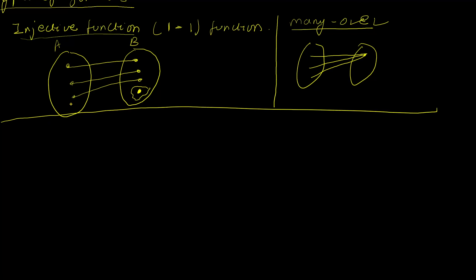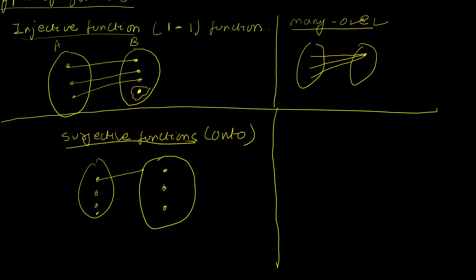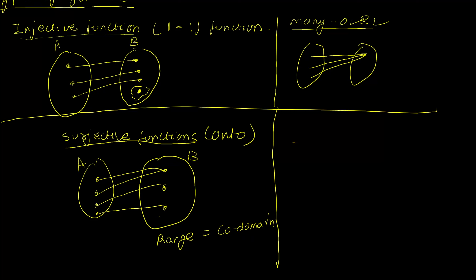The next category are surjective functions, also called onto functions. These are functions in which no output is left alone. It doesn't talk about how many inputs or outputs map against each other, but it ensures that in the output space there is no output that doesn't map to some input. For example, four inputs and three outputs where all three outputs are covered — this is surjective. The necessary criterion is that the range of the function equals the co-domain.